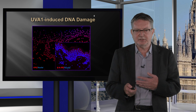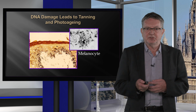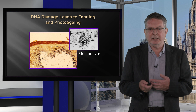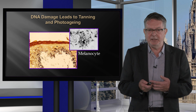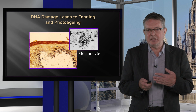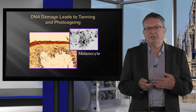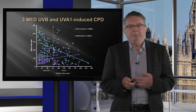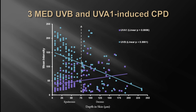DNA damage has many consequences, including tanning, photoaging, and skin cancer. A melanocyte — the cell that produces pigment — is shown, with pigmentation visible after daily sun exposure for about two weeks. UVB penetrates deep into the skin, with a track of DNA damage going from the epidermis into the dermis. UVA has the opposite effect — damage actually increases as you go deeper into the skin.